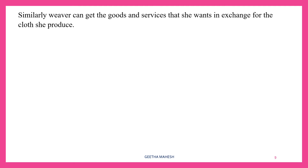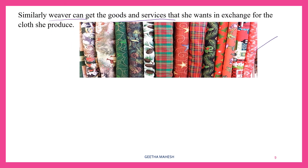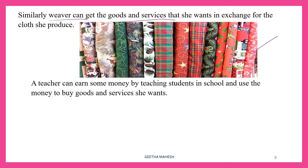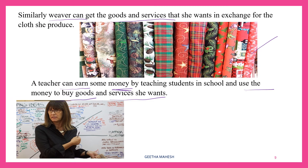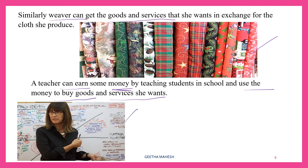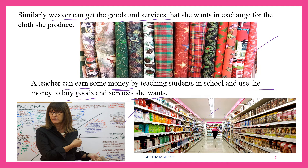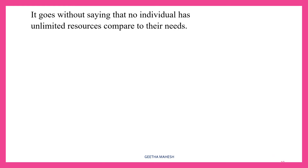Similarly, a weaver is able to exchange goods and services — this is why we can sell clothes. If the teacher is able to go to school, she will buy other goods and services she wants. Now we have a farmer, a weaver, and a teacher. They can use the resources and produce goods and services.